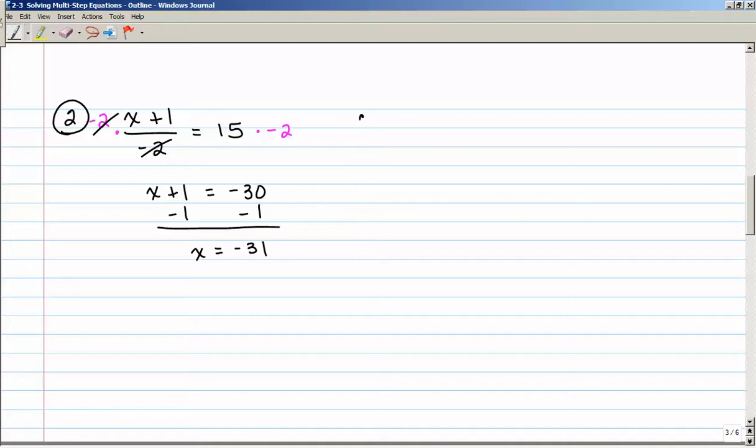So let's check that. Let's plug negative 31 in for x into the original equation. So is negative 31 plus 1 divided by negative 2, is that equal to 15? And just PEMDAS this side. Negative 31 plus 1 is a negative 30 divided by negative 2, is that equal to 15? And indeed it is. My solution checks. So x equals negative 31.